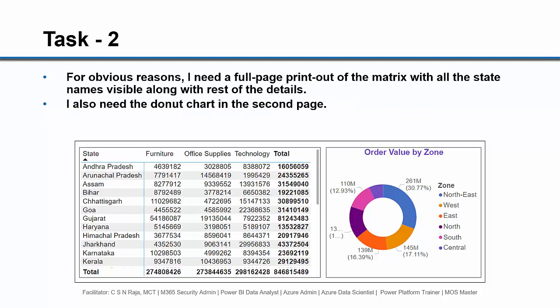The second task: for obvious reasons, I need a full-page printout of the matrix visual with all the state names visible along with the rest of the details. I also need the donut chart on the second page. These are the two tasks I am going to demonstrate.